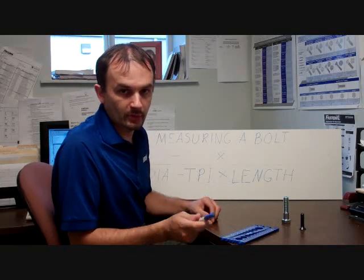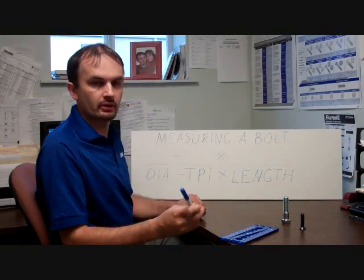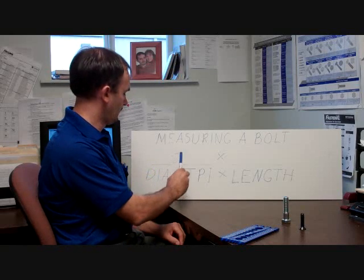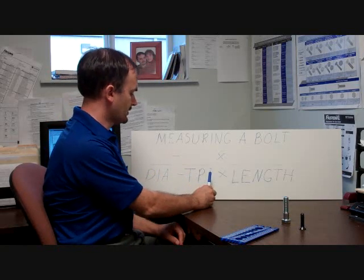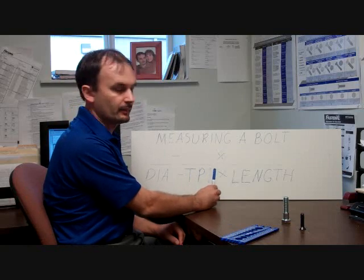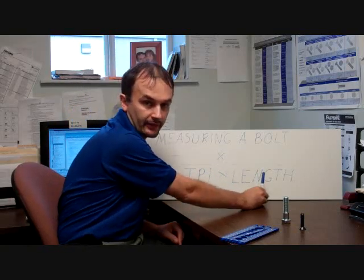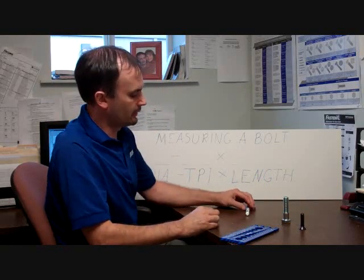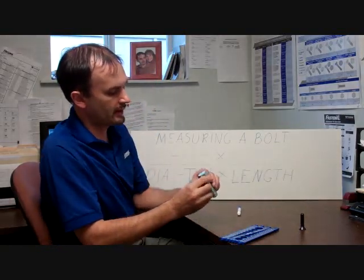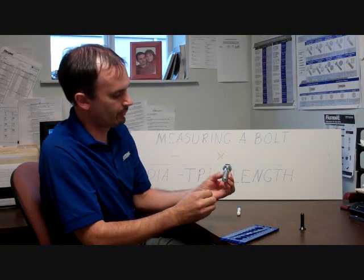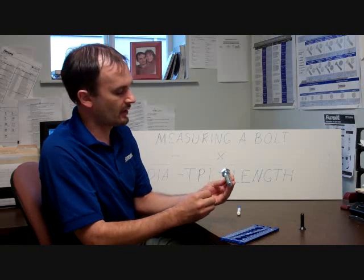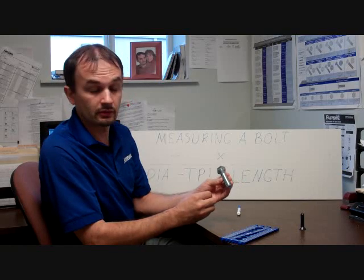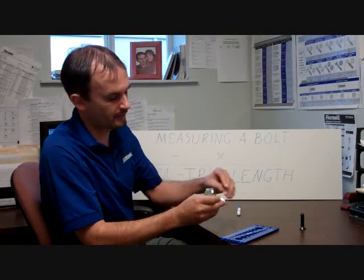Bolts are normally measured in this order. We'll have the diameter, we'll have the threads per inch or the TPIs and then we'll have the length of the bolt. So with that in mind, we're going to look at a grade 8 hex head bolt and we're going to pretend we have no idea on the size of this thing and we're going to have to measure it to figure our size out.